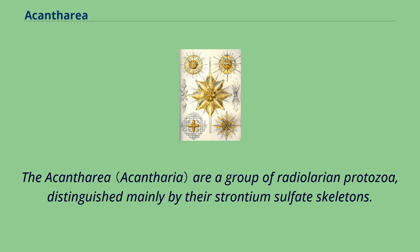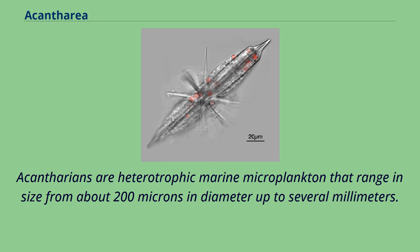The acantharia are a group of radiolarian protozoa, distinguished mainly by their strontium sulfate skeletons. Acantharians are heterotrophic marine microplankton that range in size from about 200 microns in diameter up to several millimeters.